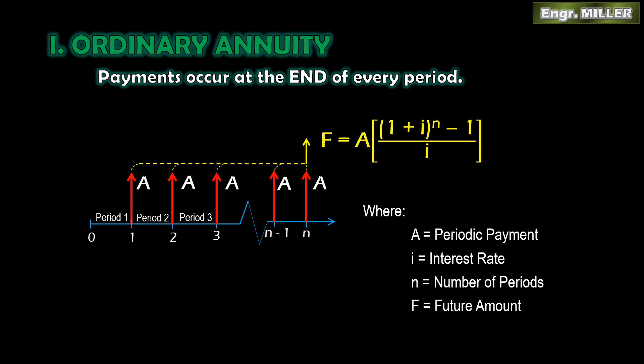Always be careful with N and i. If payments are made monthly, then N must be the number of months and i must be the interest rate per month. If payments are made yearly, then N is number of years and i is interest per year. Always make sure they match.